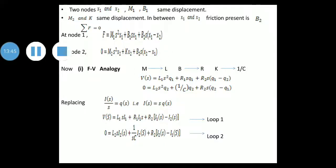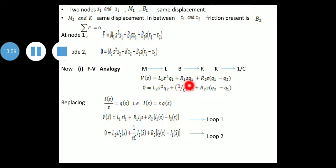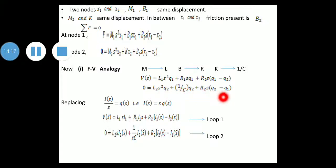Now we apply FV analogy, where M → L, B → R, K → 1/C. Substituting in equation 1: V(S) = L1 S² Q1 + R1 S Q1 + R2 S(Q1 − Q2). Second equation: 0 = L2 S² Q2 + (1/C) Q2 + R2 S(Q2 − Q1). These two equations are written in FV analogy form.